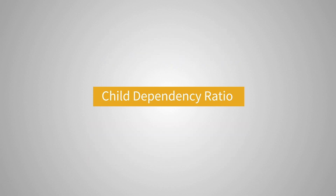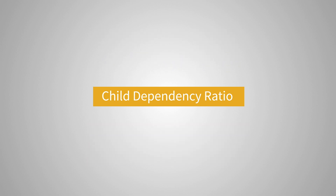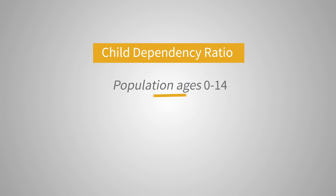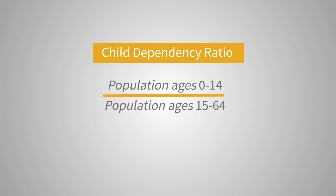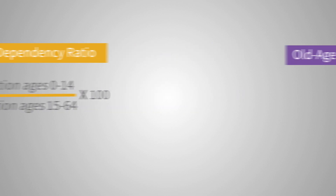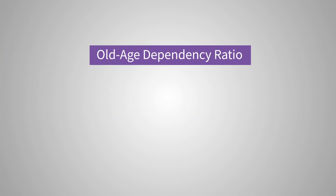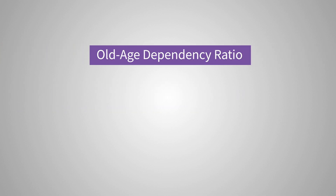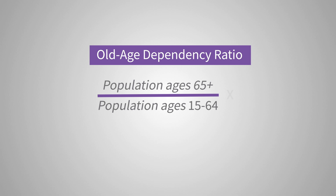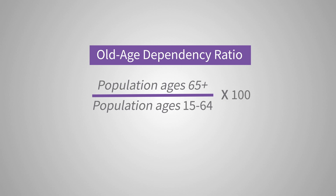A child dependency ratio is the number of persons ages 0 to 14 divided by the number of persons ages 15 to 64, multiplied by 100. An old age dependency ratio is the number of persons ages 65 and over divided by the number of persons ages 15 to 64, multiplied by 100.